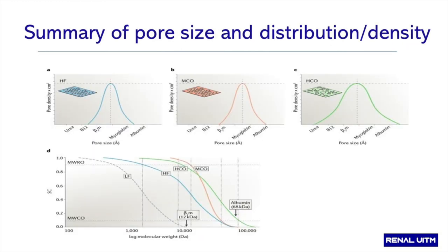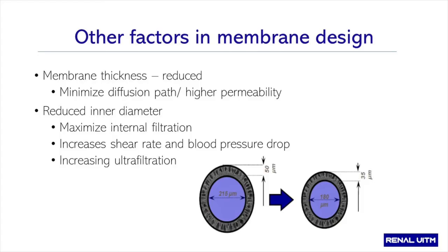This is the summary of pore size and distribution or density. The blue one is the high flux membrane, the middle one is the middle cutoff, and the green one is the high cutoff. With a nice narrow and large pore size distribution, you can change the retention onset of a specific membrane. Due to this, treatment with middle cut-off membranes expands the spectrum of uremic toxins that can be removed by hemodialysis — and therefore this novel treatment modality is called expanded hemodialysis or HDX.